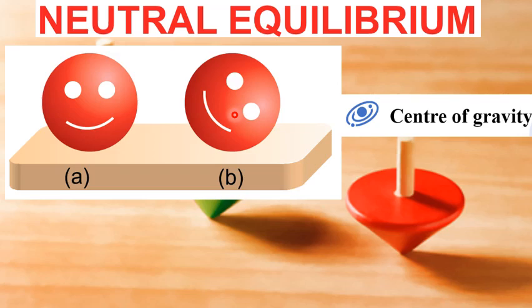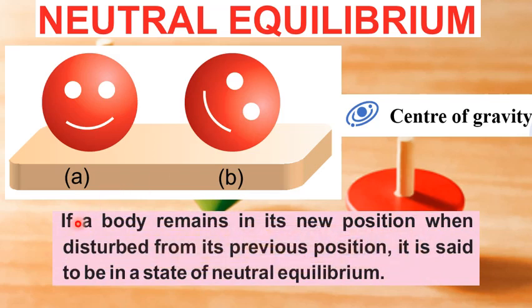There are various objects which have neutral equilibrium, such as a ball, a sphere, a ruler, a pencil lying horizontally, and an egg lying horizontally on a flat surface. We can define neutral equilibrium as: if a body remains in its new position when disturbed from its previous position, it is said to be in the state of neutral equilibrium.